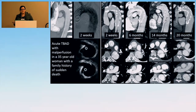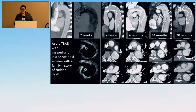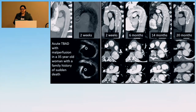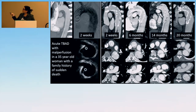Following these patients is critical. Sometimes you have to do TEVAR to get people out of trouble with malperfusion, but the graft may not seal well. This woman came in with malperfusion and a family history of sudden death — her grandmother died in her sleep at 40. Just two weeks post-TEVAR, you can already see it's not sealing around the graft. Over time the graft was just floating in the lumen. She came to the ER with chest pain as I was leaving for this meeting. TEVAR was not the best long-term solution here.